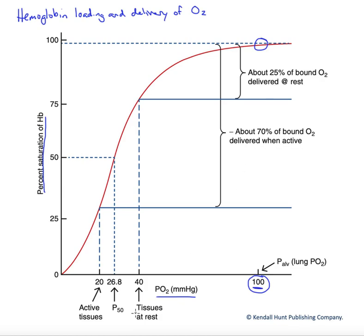Now, when our tissues are at rest, they generally have a partial pressure of oxygen in this ballpark range of about 40. So we go vertically from there, approximately equal to 75% saturated.